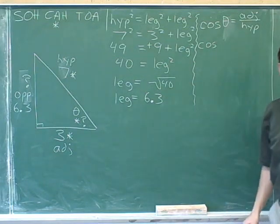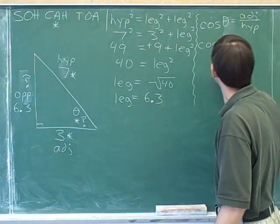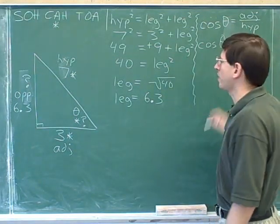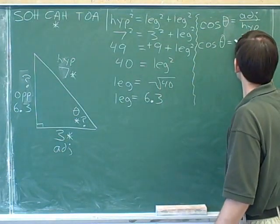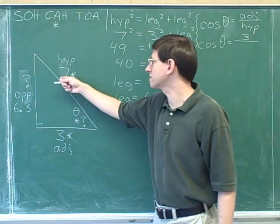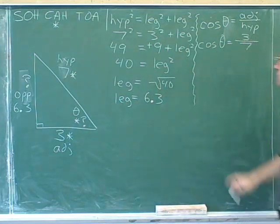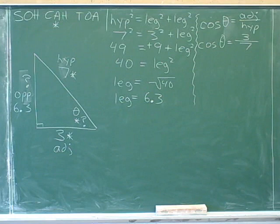What do I plug in for theta? Nothing. We don't know what theta is. What do I plug in for the adjacent side? 3. What do I plug in for the hypotenuse? 7. Cosine theta equals 3 sevenths.